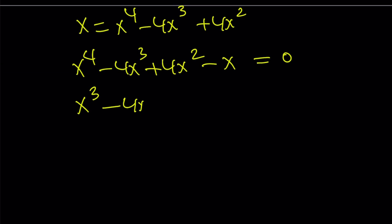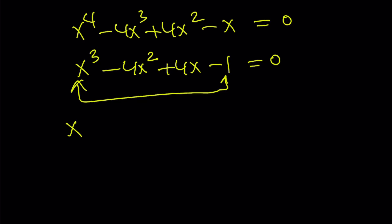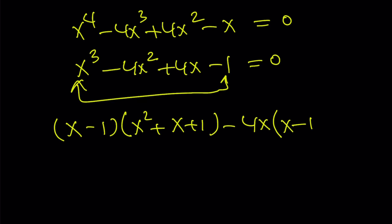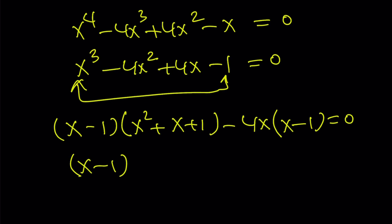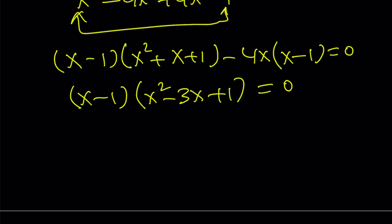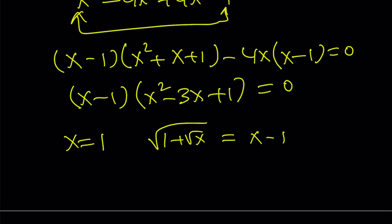Ignoring x equals 0 and dividing both sides by x gives a nicer cubic equation that is also factorable by grouping. x cubed minus 1 is a difference of two cubes, written as (x minus 1)(x squared plus x plus 1). The rest factors as negative 4x times (x minus 1). Taking out the common factor (x minus 1), we get x squared plus x plus 1 minus 4x, and since x minus 4x is negative 3x, we write it as x squared minus 3x plus 1. This gives three solutions. Checking x equals 1 in the original equation: the left-hand side gives square root of 2, but the right-hand side gives 0 — they're not equal, so x equals 1 is extraneous.